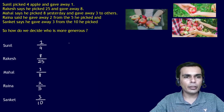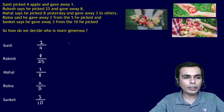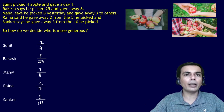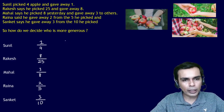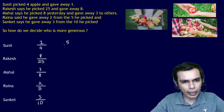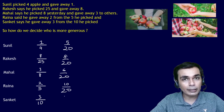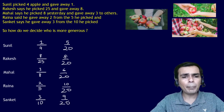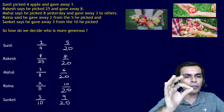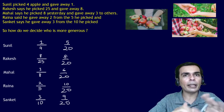All of them picked different numbers of apples and each gave away different amounts. Now if I told you that Sunil gave away 5 from 20, Rakesh gave away 8 from 20, Mahal gave away 6 from 20, Raina gave away 10 from 20, and Sanket gave away 9 from 20 — that would be easy to compare because all of them picked 20 and gave away 5, 8, 6, 10 and 9 from those 20.